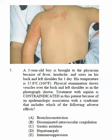That syndrome includes which of the following adverse effects? When aspirin is contraindicated, you might think about Reye's syndrome. Looking at the picture, we cannot see the vesicles clearly. The answer choices are: A) bronchoconstriction, B) disseminated intravascular coagulation, C) gastric irritation, D) hepatomegaly, and E) immunosuppression.